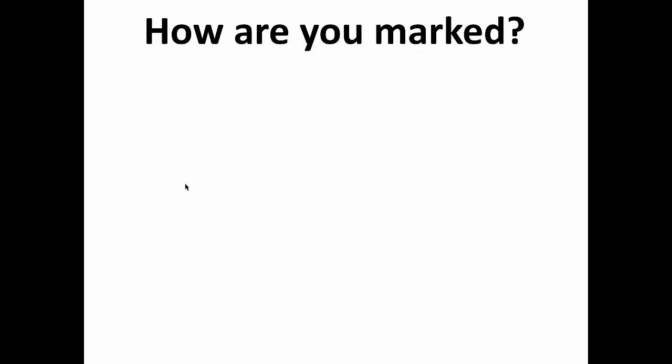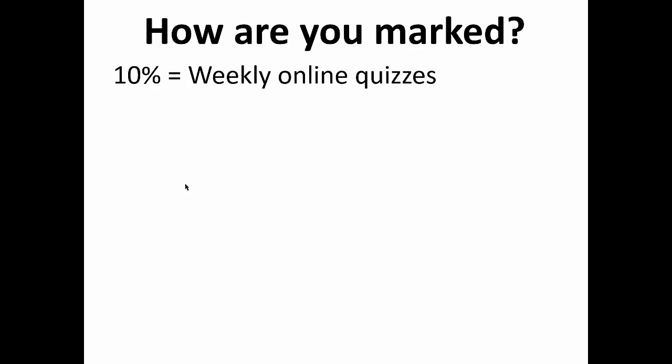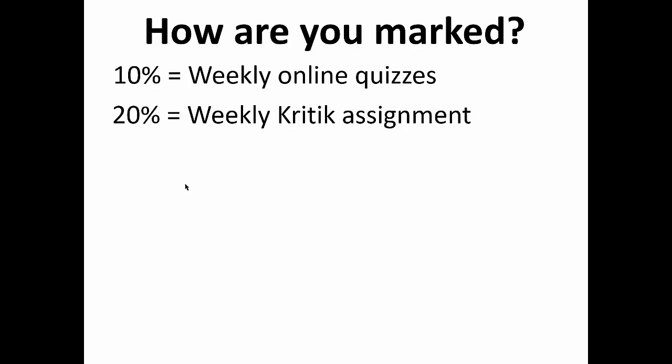So by this point you're probably asking how you're marked. Well, 10% of your mark is based on a weekly online quiz designed to ensure that you read the textbook and hopefully learn from it. Another 20% are weekly Critic assignments. Critic is an online system that you'll have to subscribe to — I'll provide information for that under a different video. Critic is actually the only thing you absolutely must buy this semester, and it should be $20 plus tax.